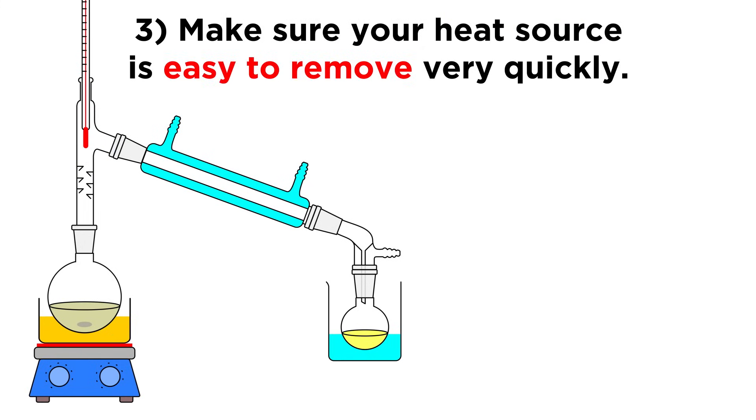Third, make sure your heat source is easy to remove very quickly. If it's a Bunsen burner, make sure the setup is such that you can just pull the burner away instantly. If a hot plate, make sure it's easy to loosen one clamp and pull things apart easily. It's possible for the mixture to suddenly begin boiling violently, and we need to remove the heat right away if that happens.